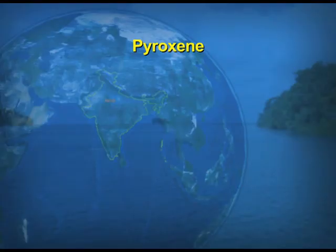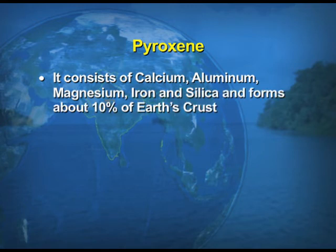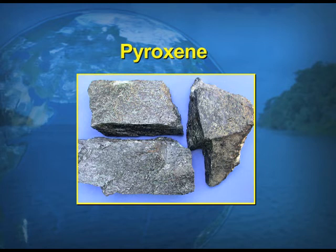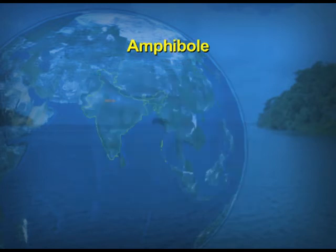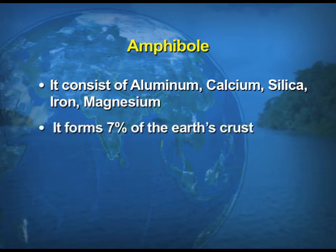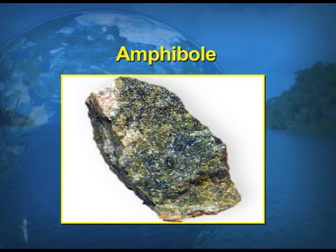Pyroxene consists of calcium, aluminum, magnesium, iron, and silica, forming about 10% of the Earth's crust. It is generally green or black in color. Amphibole is another mineral consisting of aluminum, calcium, silica, and iron, forming 7% of the Earth's crust. Like pyroxene, amphibole is also green or black in color.